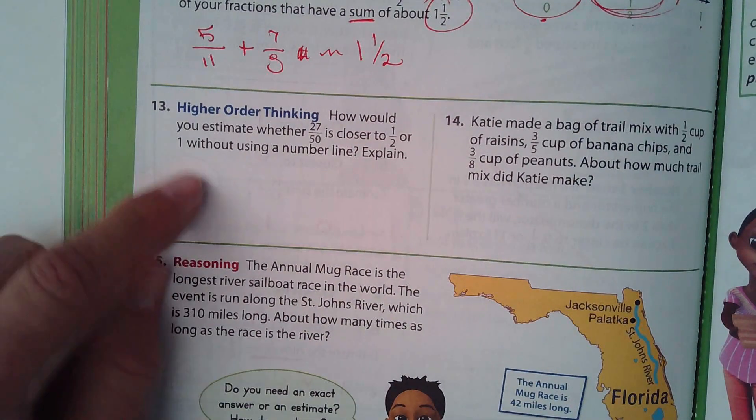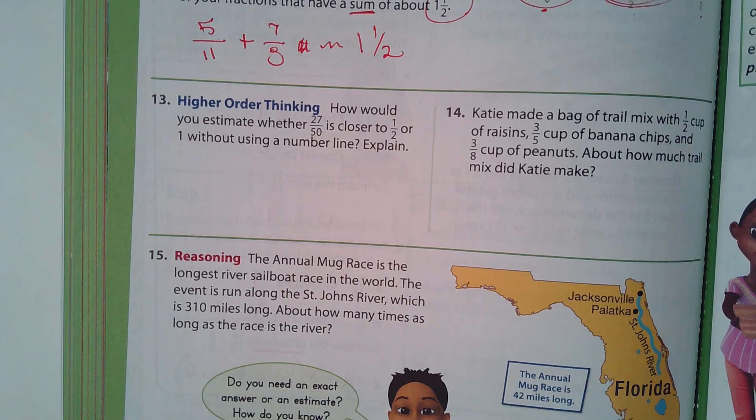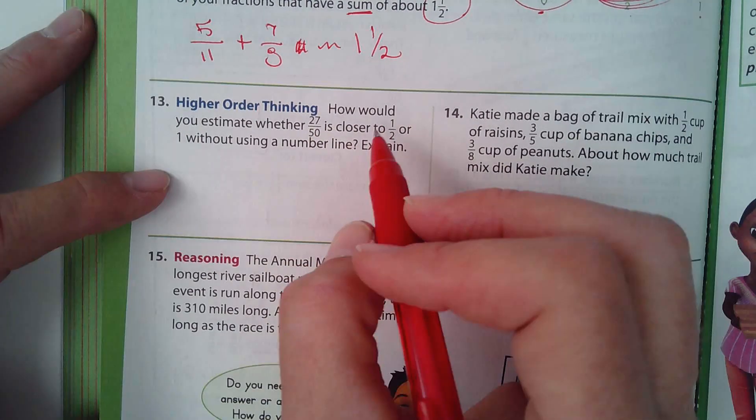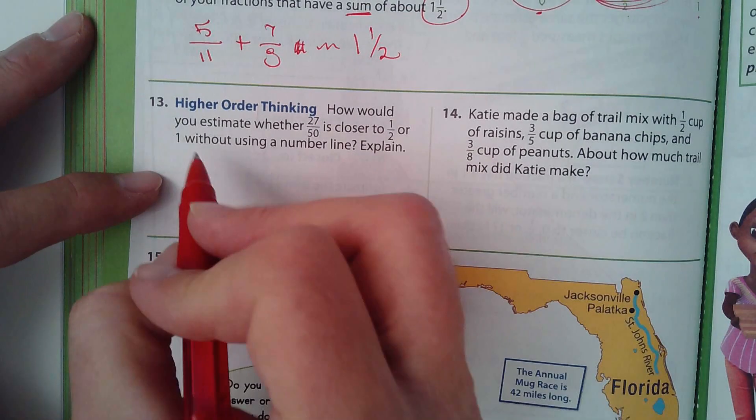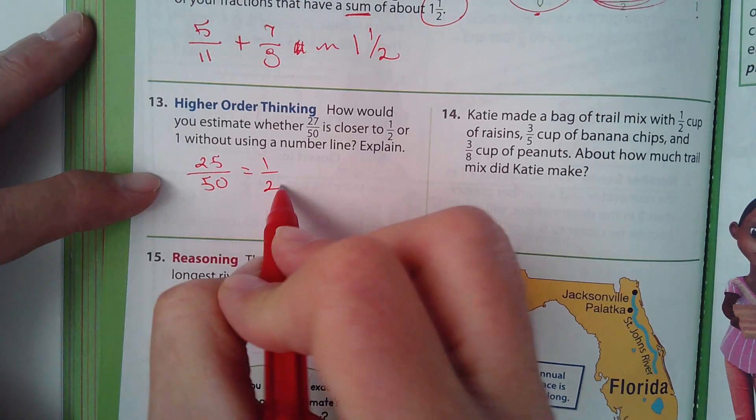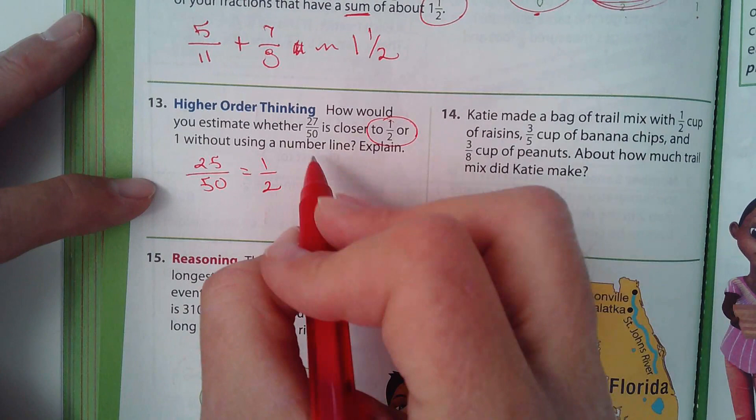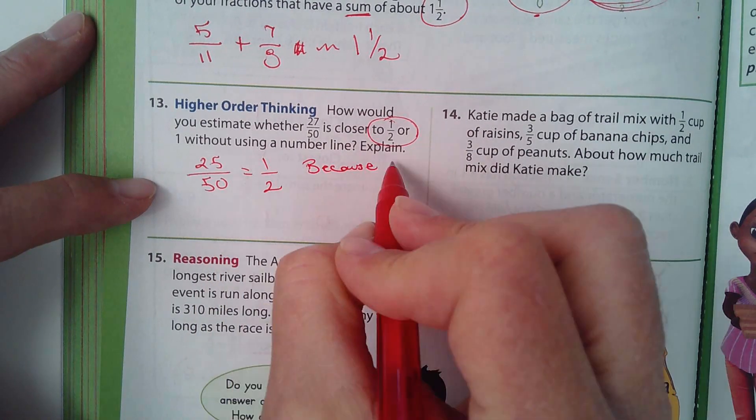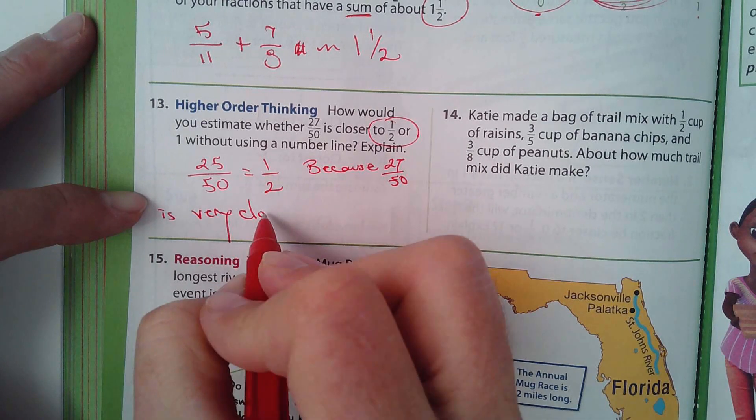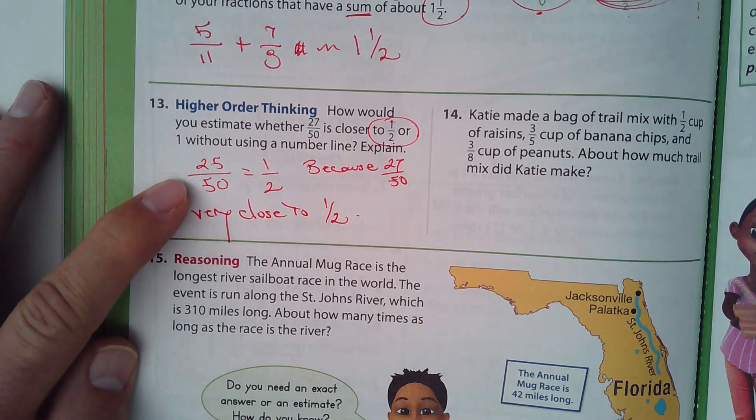How would you estimate whether 27 over 50 is closer to one-half or one without using the number line? I can't use the number line, but that's okay. I look at 27 over 50, and I'm thinking that's really close to 25 over 50. And what's that equal to? One-half. So it's obviously closer to one-half. And you could say, it says explain, because 27 over 50 is very close to one-half. It's only two-fiftieths away from one-half.